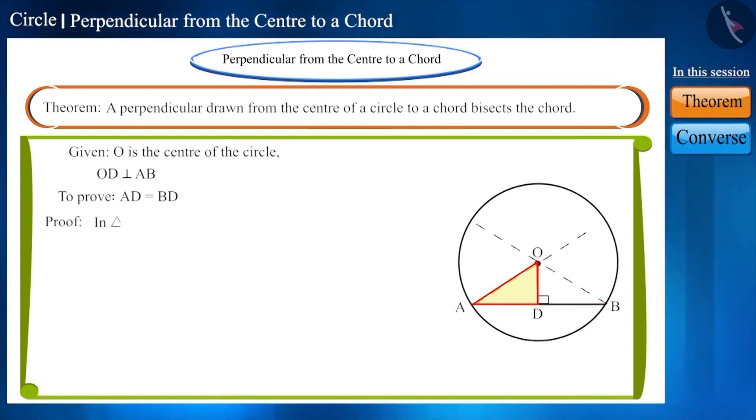Friends, in triangle ODA and triangle ODB, angle ODA and angle ODB are right angles because we are given that OD is perpendicular to AB. And the hypotenuse OA and OB of these two triangles are the radii of this circle, so they will also be equal.